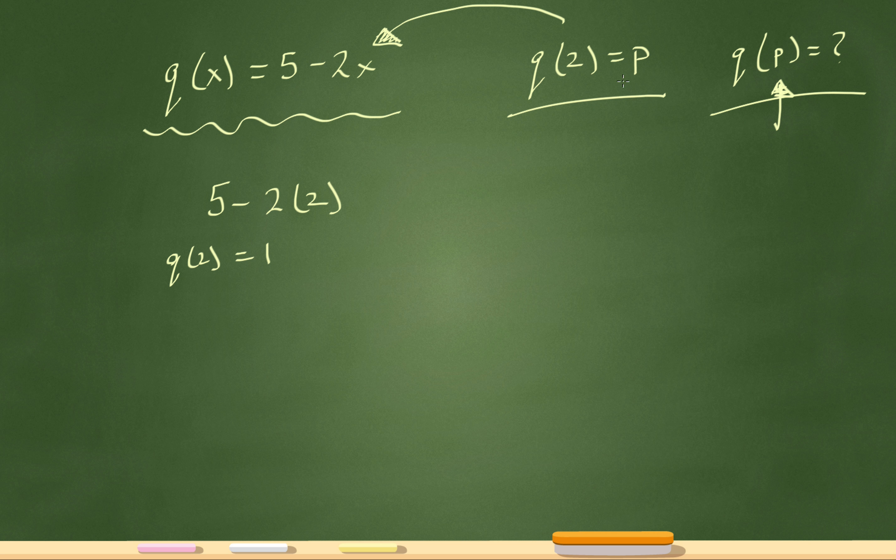And it tells me that q of 2, whatever I get for q of 2 is the value of p. So I got 1 for q of 2 so I know that p equals 1.